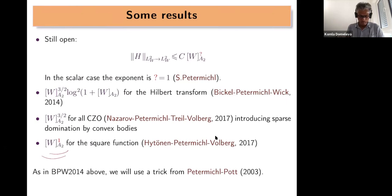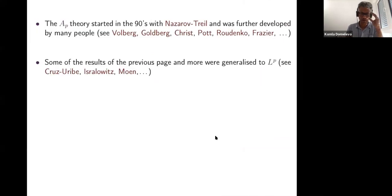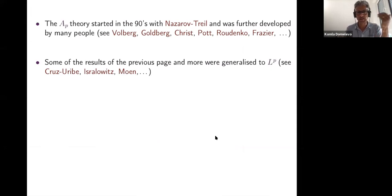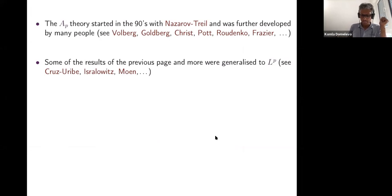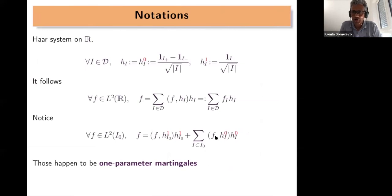I'm going to introduce a few notations about the Haar system that Sandra mentioned yesterday. We consider the standard Haar function — this is the function on a dyadic interval I, correctly normalized with L2 norm equal to one. We also note with index one the non-cancellative Haar function, which is simply the characteristic function, also normalized. In all that follows, index zero refers to something cancellative — a function with integral zero — and index one means non-cancellative.